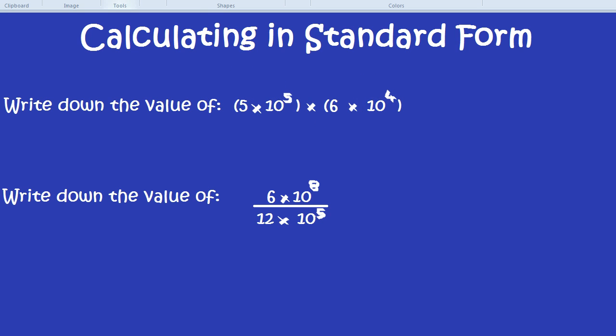What I would do, first of all, is rearrange it so you've got the numbers together and the powers of 10 next to each other. In this case, that would be 5 times 6 times by 10 to the power of 5 times 10 to the power of 4.